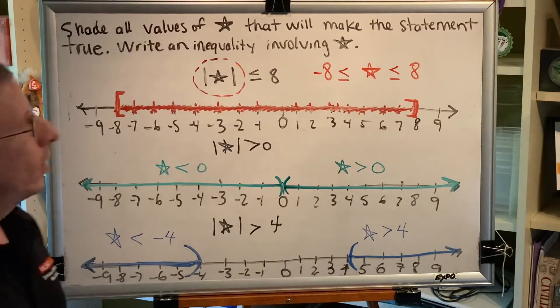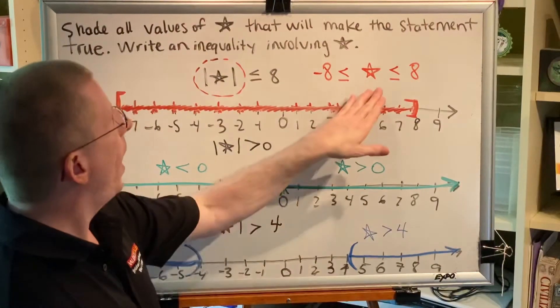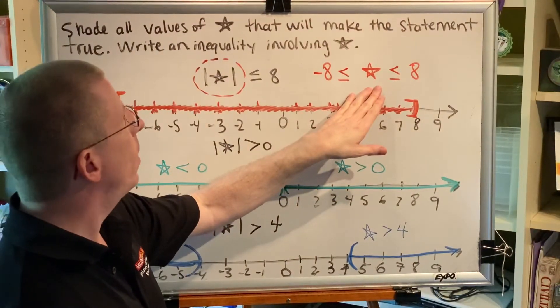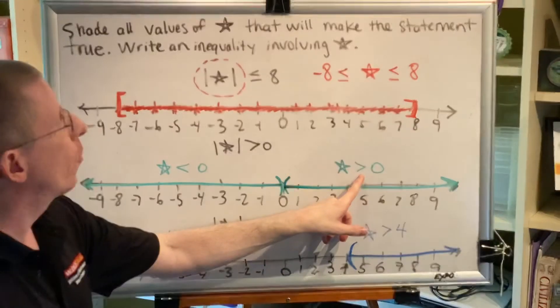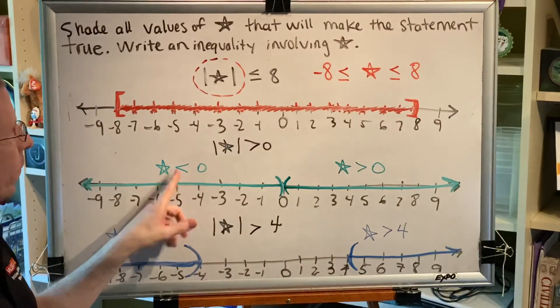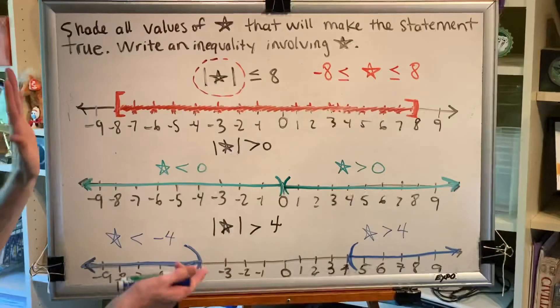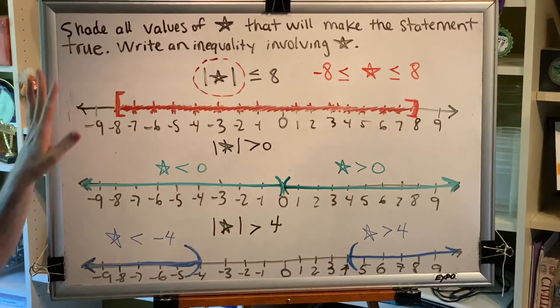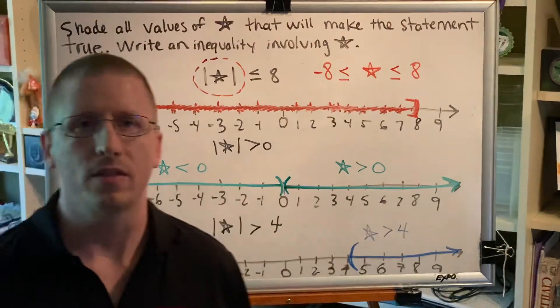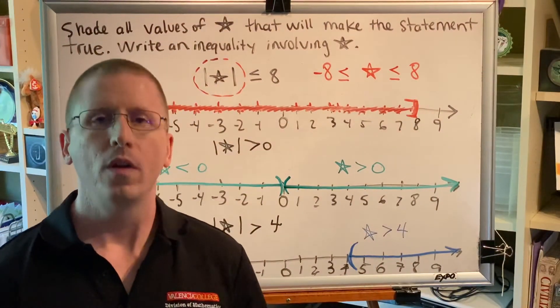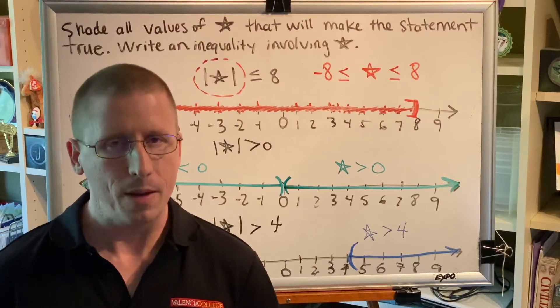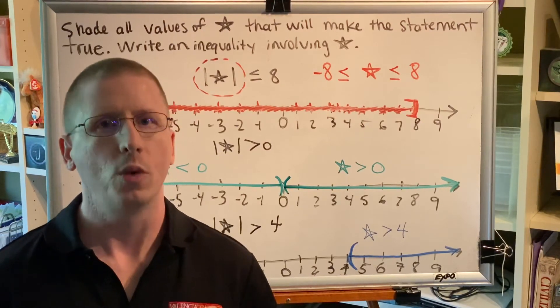If you remember these rules, how to write a between type inequality and the greater than to the right and less than to the left rules, then you should be able to take any picture like this and turn it into an inequality statement. This will support your ability to solve inequality statements that involve absolute value, which is coming up soon.